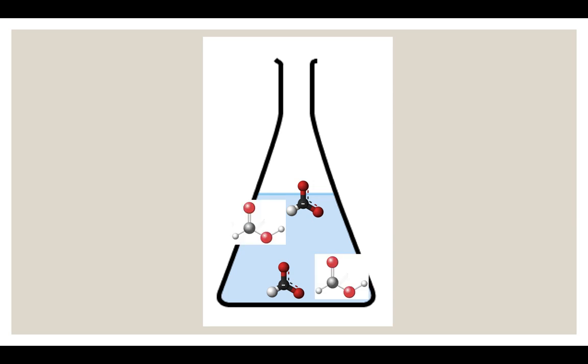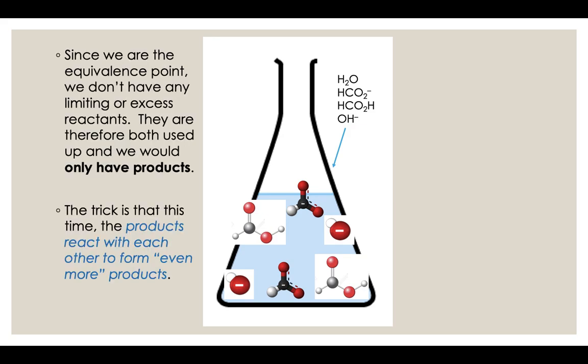Here's our HCO2H and our hydroxide. We're at the equivalence point. We don't have any original HCO2H or hydroxide left. The original stuff is gone. It got entirely used up and you have products only. The products of that first reaction are HCO2- and water. The trick is the products can react with each other to form even more products in a secondary reaction. And that's where we get that HCO2H and hydroxide from.